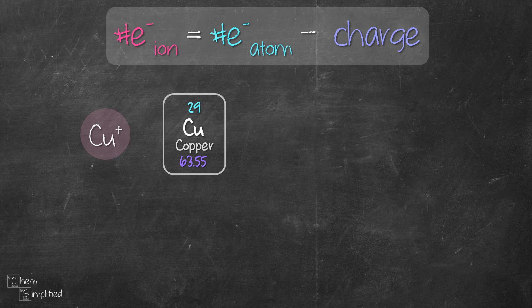That's the number of protons, which is also the number of electrons for copper atom which is neutral. That means the number of electrons for copper atom is 29. Now the charge is already given. For Cu+, it's plus 1.